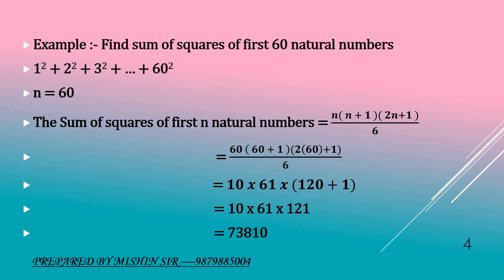So, the sum of squares of the first 60 natural numbers is 73,810.